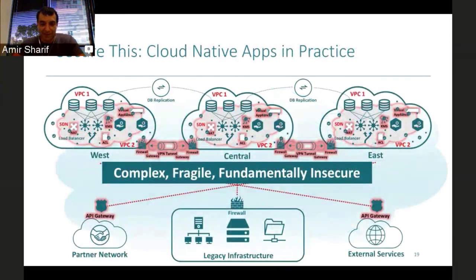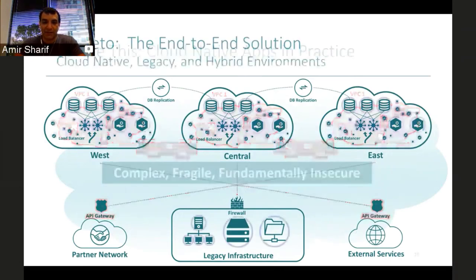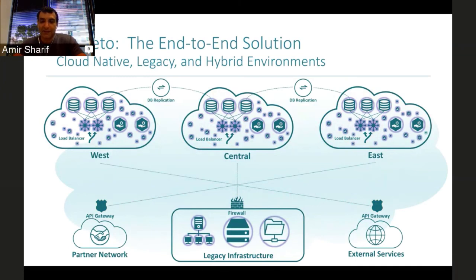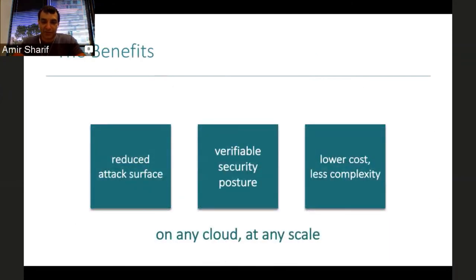Going back to that big messy picture — which is a common architecture — what we do is reduce that complexity to a much simpler picture. You can rip out a lot of the ugly infrastructure and go to effectively a zero trust network, assuming everything's on the internet and applications are prohibited from communicating in or out unless your policy allows them. That allows you to take full advantage of a flexible platform like OpenShift and focus on application delivery instead of maintaining state. You get a reduced attack surface, a verifiable security posture, and because you can rip out a lot of complexity, you get a lower cost — on any cloud, and we scale pretty well.